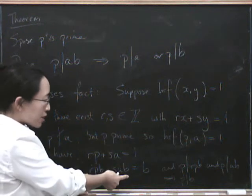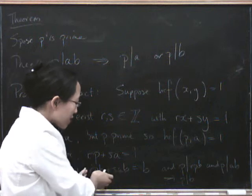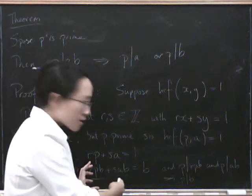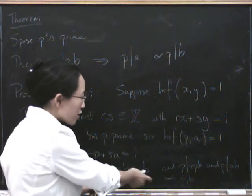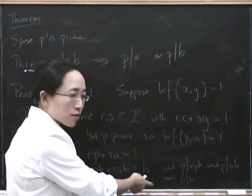So it definitely divides sab. And if p divides this plus that, then it definitely divides the sum, so we conclude that p must divide the right-hand side as well. So we're done.